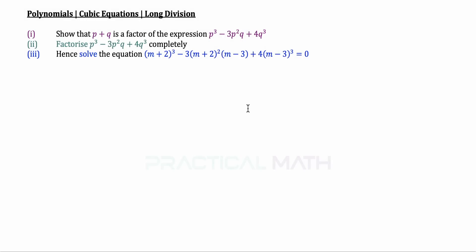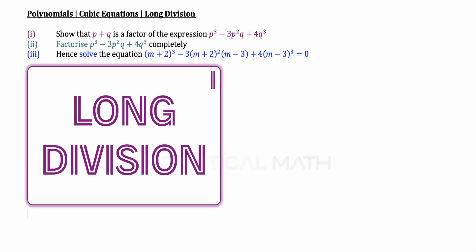In the first part of this question, we are to show that p plus q is a factor of this cubic expression. There are a few ways of approaching this question — we can either use long division or the factor theorem. We will be using long division because using the factor theorem would be a bit confusing as this expression consists of two unknowns, p and q. So long division is the easier approach here.